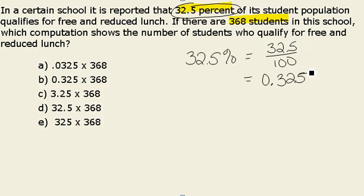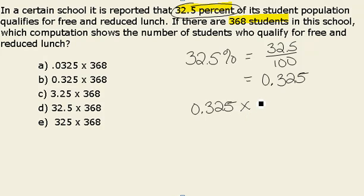The next thing we want to do is find 32.5% of 368. In order to do that, one way we can do is set up the multiplication: 0.325, or 32.5%, times our total of 368. This is going to give me the calculation I need in order to find the number of students who qualify for free and reduced lunch.